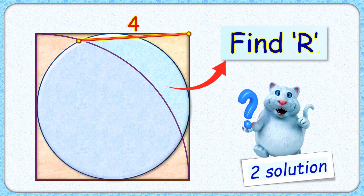Welcome to this interesting question where we have a circle and a quarter circle inside a square. The distance between the point of intersection of the quarter circle and the circle and the vertex of the square — this red line segment — is 4 centimeters. The exciting part is that with this limited data, we have to find the radius of the circle.